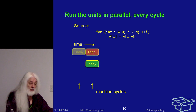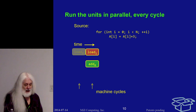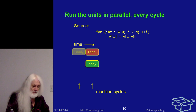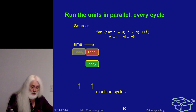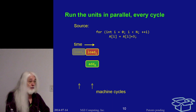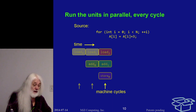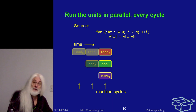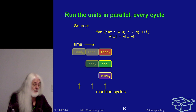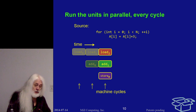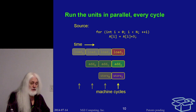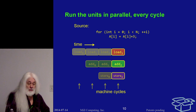Each upward-pointing arrow represents a machine cycle. The following cycle we do the load for iteration two, the add for iteration one, and store the result of the add which belonged to iteration zero — so we're spreading different iterations across the machine cycles.